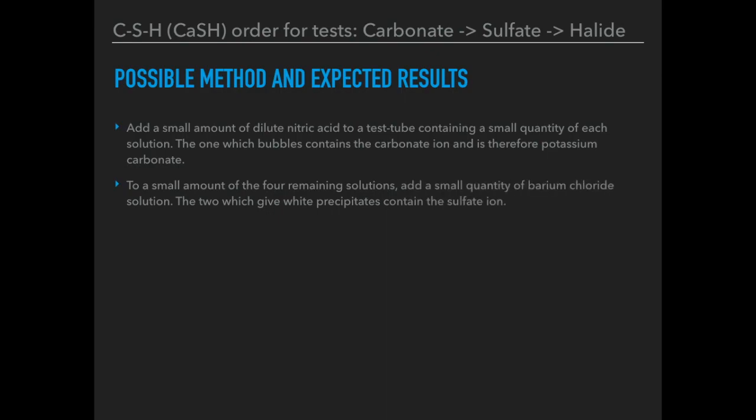With four remaining solutions, we add a small quantity of barium chloride solution to each. Two of them are sulphates, so we should expect to see two white precipitates. At that point, we can't say which is which, because one is ammonium sulphate and the other is a metal sulphate.